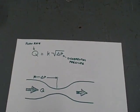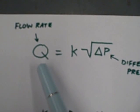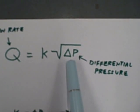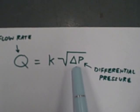What we're going to do here is explore the quadratic relationship between flow rate through an orifice or a venturi tube and the differential pressure that orifice or venturi tube creates.